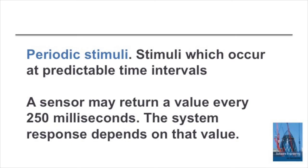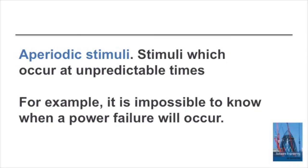Aperiodic stimuli are stimuli that happen at unpredictable intervals. So for example, if we have a sensor measuring the power in a system and there's a power failure, we'll get a stimulus from that sensor but we won't know when that's going to happen.